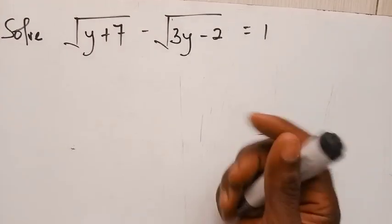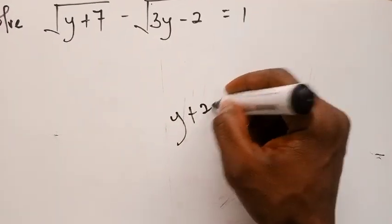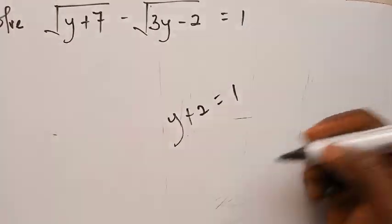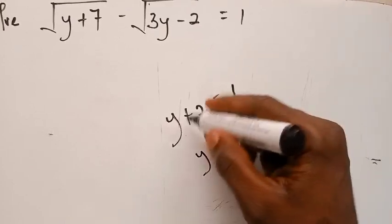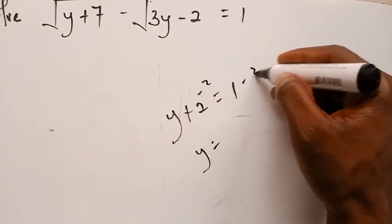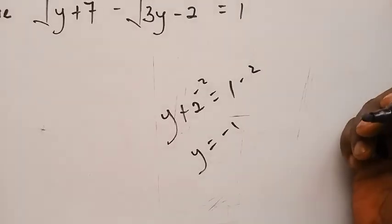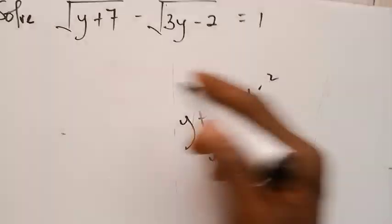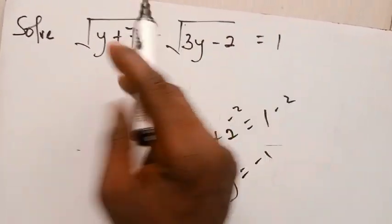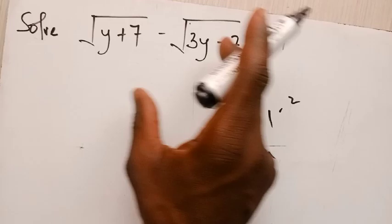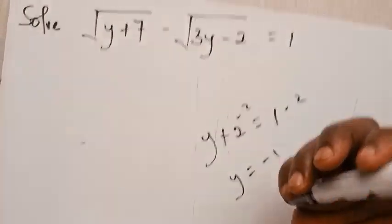This is very, very simple. When I say y plus 2 equal to 1, you can easily find y by subtracting 2 from both sides, giving y equal to negative 1. This is very easy. So what will happen if you have the square root sign — a double square root sign in this form? How do you go about it?